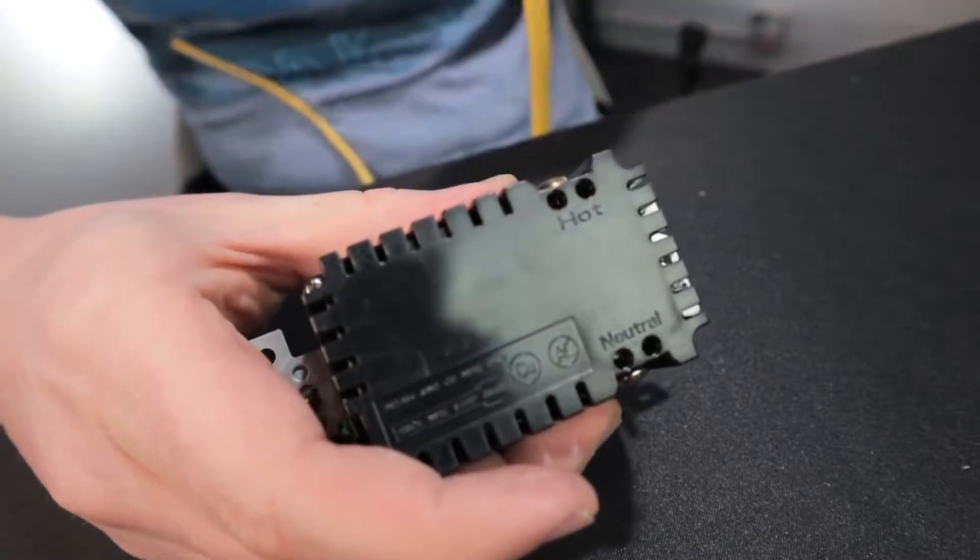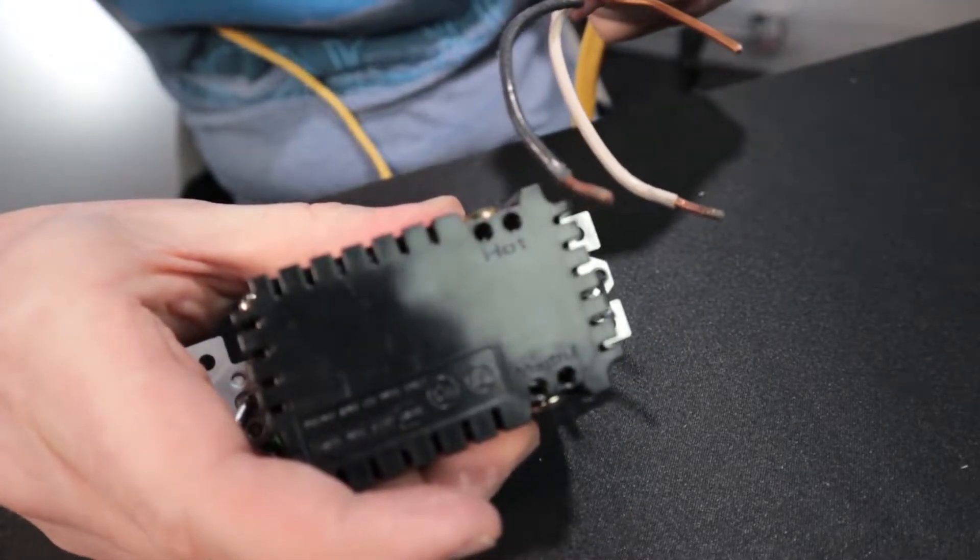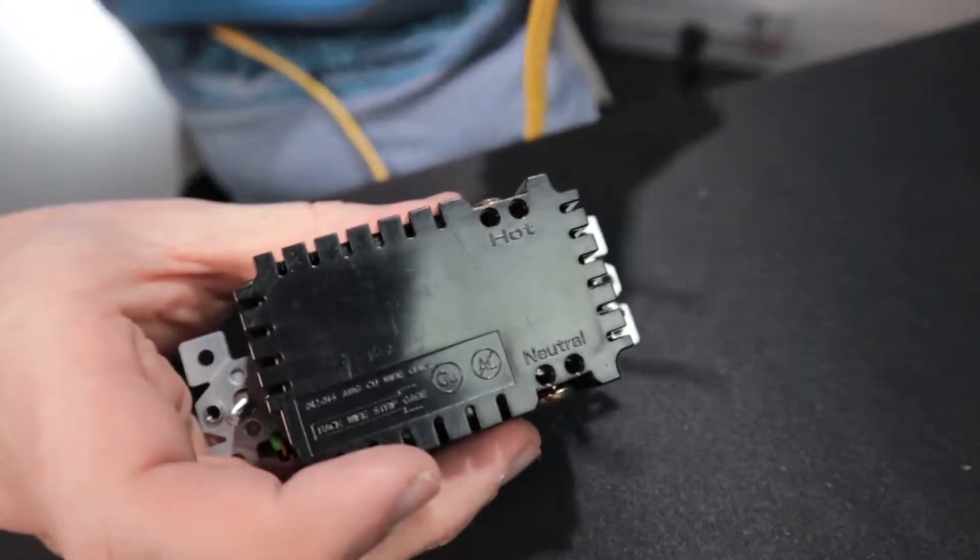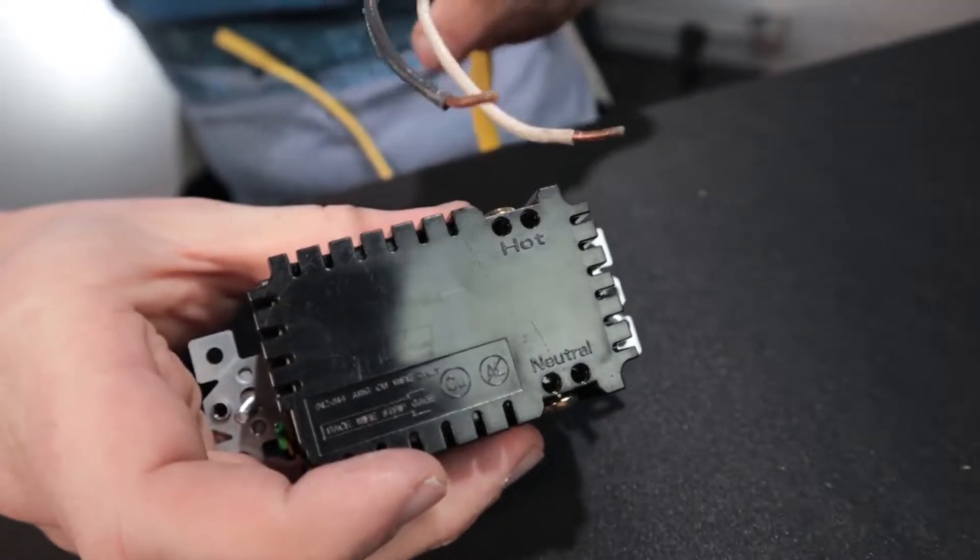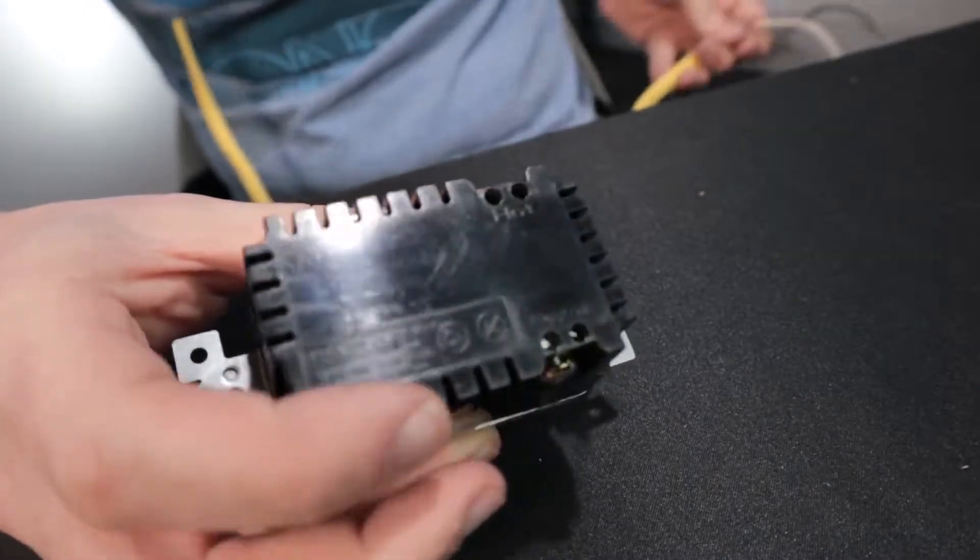So the hot is going to be our black wire. The neutral is going to be our white wire. And the copper or green, if it might be a green wire or the bare copper wire, is our ground.